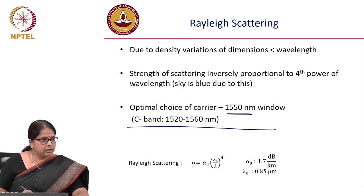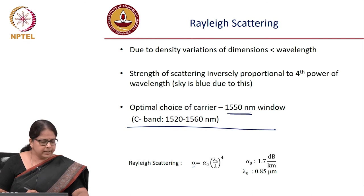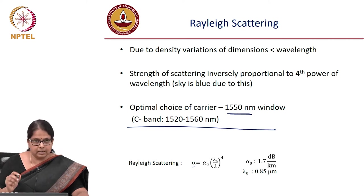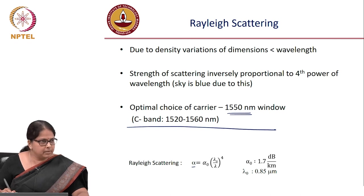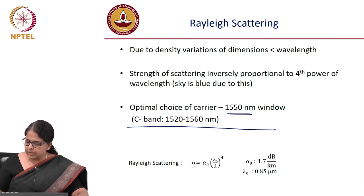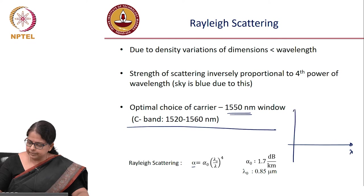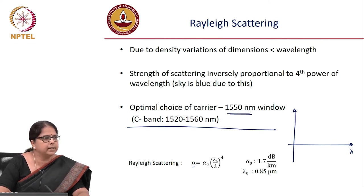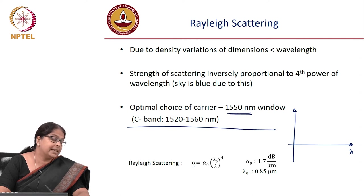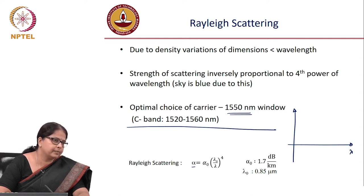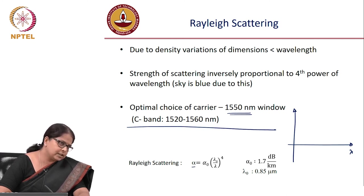The empirical model for Rayleigh scattering loss in a commercial single-mode fiber is: α = α₀(λ₀/λ)⁴, where α₀ = 1.7 dB/km. Since scattering is inversely proportional to λ⁴, more scattering means higher loss. As wavelength increases, 1/λ⁴ decreases, so scattering loss decreases.